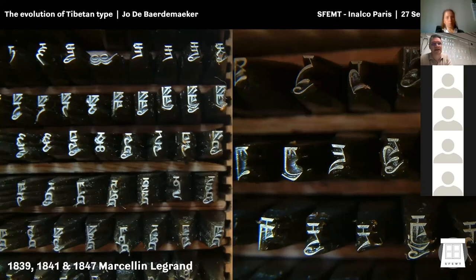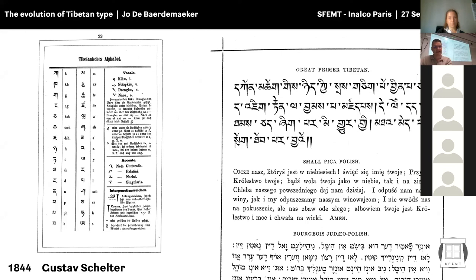The first bold typeface for Tibetan — a secondary weight used to give attention to parts of the text or set titles and highlight character sets — was done by Gustav Schelter. It was used in some Tibetan linguistic works from Schroeder, and later moved from Germany all the way across Europe and was used in London by different type founders and printers.